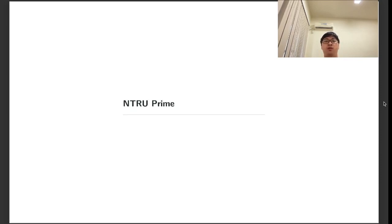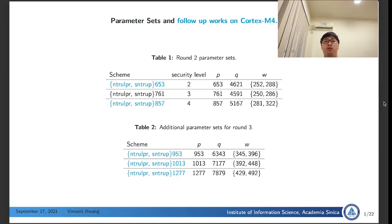N-True Prime is an alternate candidate in the third round of NIST Post-Quantum Cryptography Standardization. There are in total six parameter sets. In our paper, we focus on the parameter set where p is equal to 761. In this video, I'll show our result for all other parameter sets on Cortex-M4.